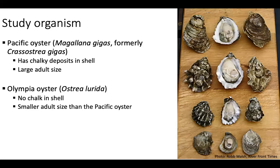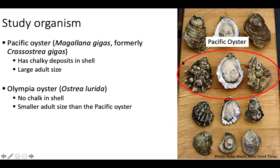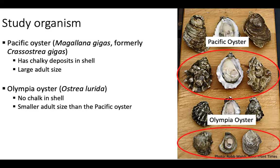I chose the Pacific oyster, Magallana gigas (formerly Crassostrea gigas), which has extensive chalk deposit formation in its shell, grows very quickly, and has a large adult size. The other oyster I chose was the Olympia oyster, which has no chalk in its shell, has a much smaller adult size, and grows more slowly. The Pacific oyster, while commonly farmed on the west coast, is not native here, while the Olympia oyster is native to the California coast.